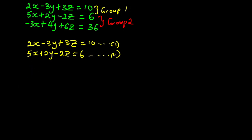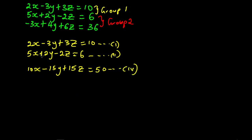Multiplying equation 1 by 5 gives us 10x minus 15y plus 15z equal to 50. We call this equation 4. Multiplying equation 2 by 2 gives us 10x plus 4y minus 4z equal to 12. We call this equation 5.